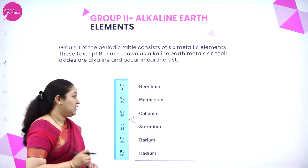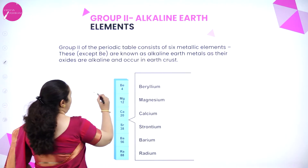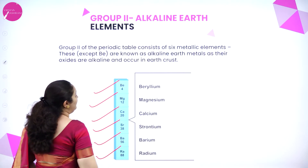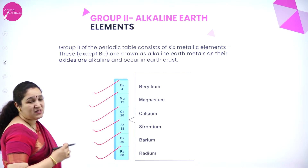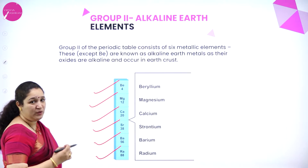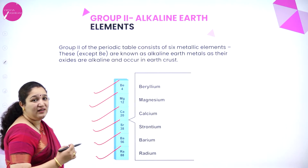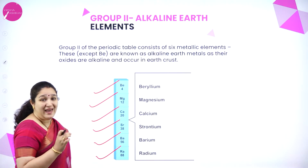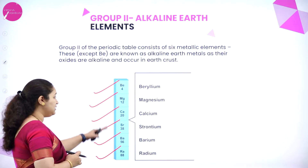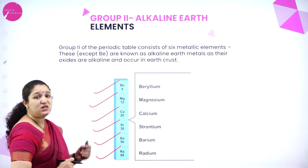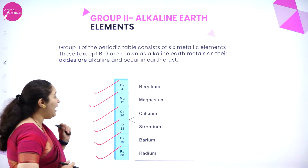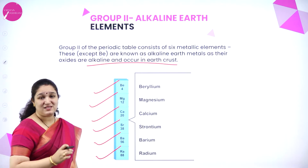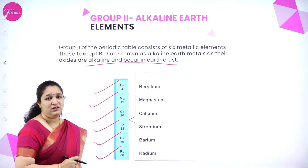Next we learn about group 2 metals, or alkaline earth metals. Group 2 consists of six elements: beryllium, magnesium, calcium, strontium, barium, and radium. They are called alkaline earth metals because, except for beryllium, their oxides are alkaline and they occur in the earth's crust.